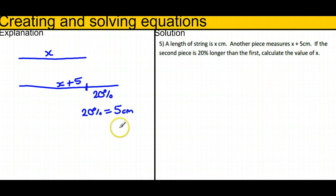We're trying to find the original length, so we need to know what 100% is. And therefore that will be times by 5, which means x was 25.